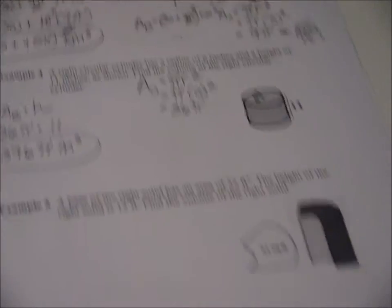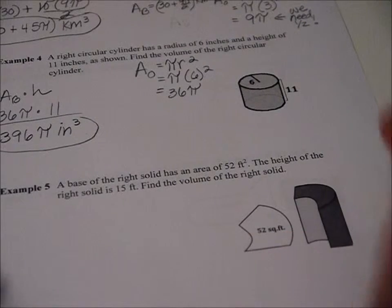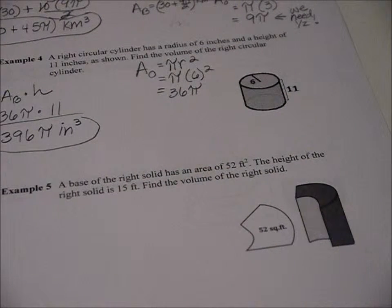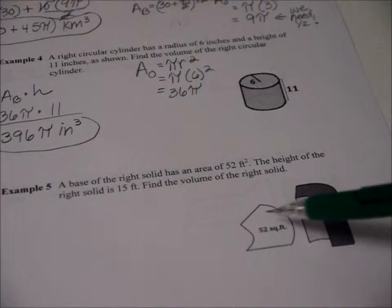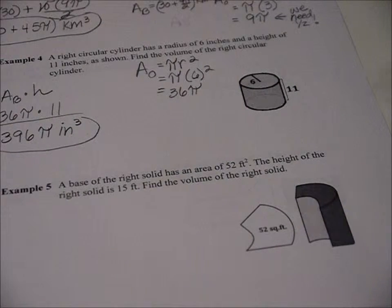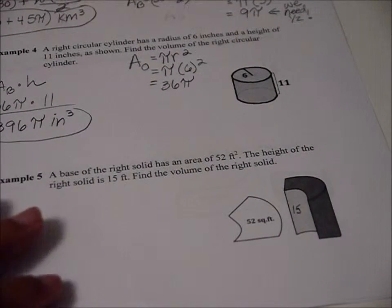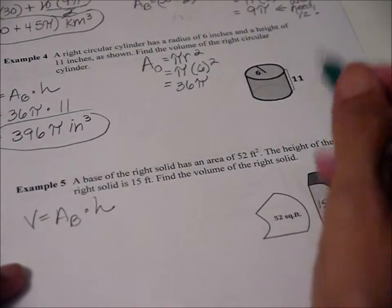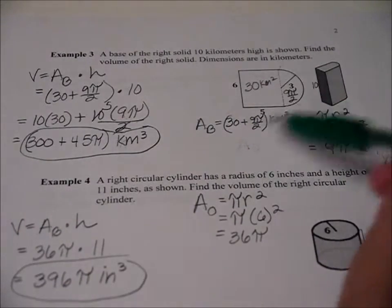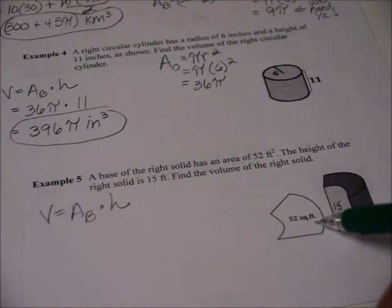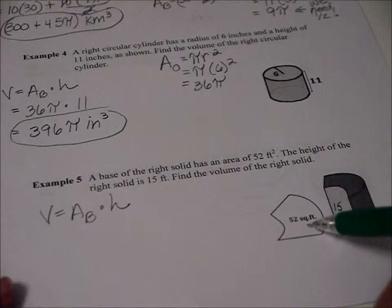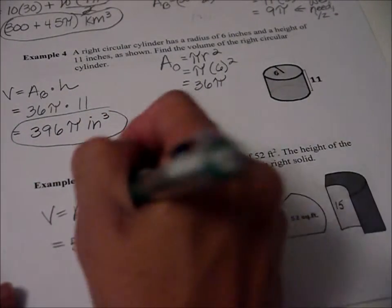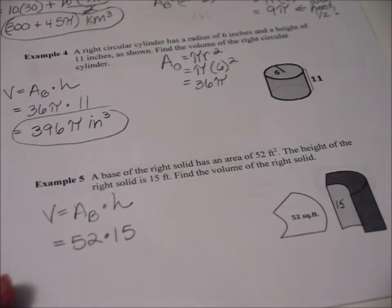Sample 5 looks terrible, but it's actually a trick. A base of the right solid has an area of 52 feet squared. The height of the right solid is 15 feet. Find the volume of the right solid. So you're thinking, okay, what? How do we find the area of this? And it's 15 feet high, so I'm going to write a 15 right here. But notice, remember, volume equals area of the base times the height. See how much work it took us above to find the area of the base? Well, look at this. They gave it to us. They did half the job for us. The area of the base is 52. They just flat out told us. So the area of the base is 52. The height is 15. All we have to do is multiply those two.